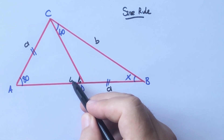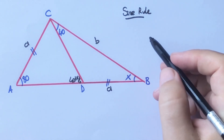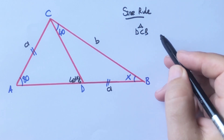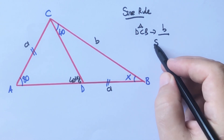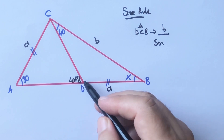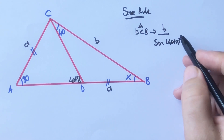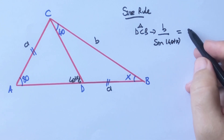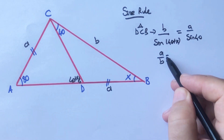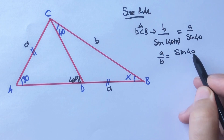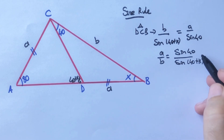We know that two interior angles equal one exterior angle. For this triangle, applying the sine rule and noting that sines of supplementary angles are equal, we get: a over sine 40 equals b over sine(40 plus x). Therefore a over b equals sine 40 over sine(40 plus x). This is the first equation.